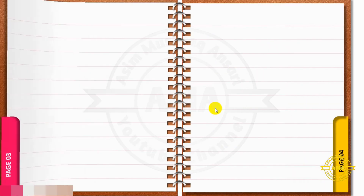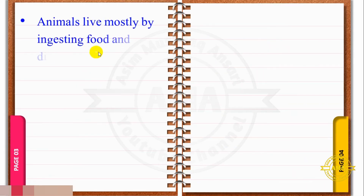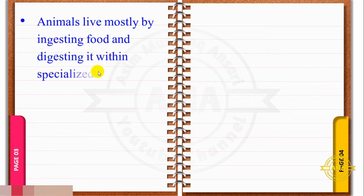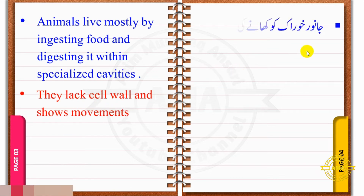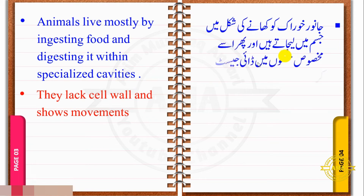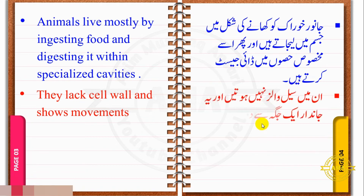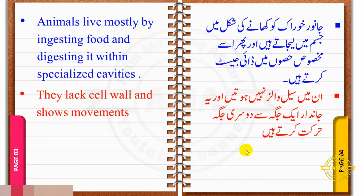Animals live mostly by ingesting and digesting food within specialized cavities. They lack cell wall and show movement. Janwar khurak ko khane ki shakal me jism me le jate hain aur phir jisai maksoos hisson me digest kertate hain. In me cell wall nahi hoti aur yeh ek jaga se doosari jaga harakat kertate hain.